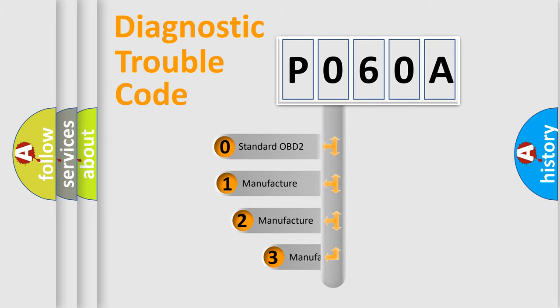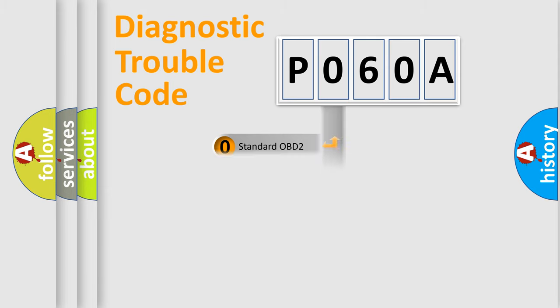If the second character is expressed as zero, it is a standardized error. In the case of numbers 1, 2, or 3, it is a more precise expression of the car specific error.